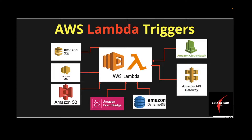Hello everyone, welcome back. Today's tutorial mainly focuses on Lambda triggers. As you know, there are many AWS services you can integrate with Lambda. The common services I list down here are SQS, SNS, S3, CloudWatch, API Gateway, Amazon DynamoDB, and EventBridge. There are many other services too, but these are the more common use cases.